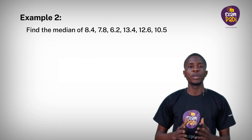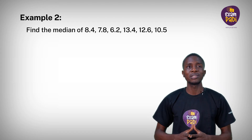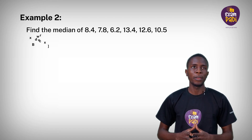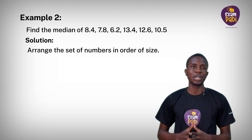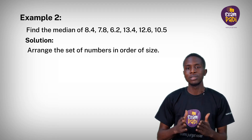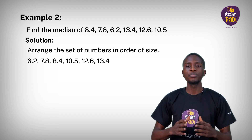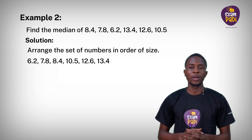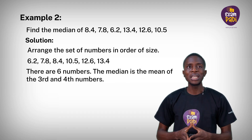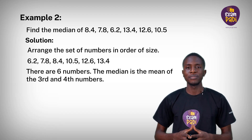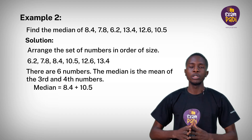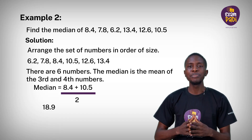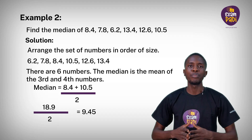Example 2: Find the median of 8.4, 7.8, 6.2, 13.4, 12.6, and 10.5. Solution: arrange the set of numbers in order of size from smallest to highest: 6.2, 7.8, 8.4, 10.5, 12.6, and 13.4. There are six numbers. The median is the mean of the third and fourth number. That is, median equals 8.4 plus 10.5 divided by 2. The sum of the two gives 18.9 divided by 2, which equals 9.45.